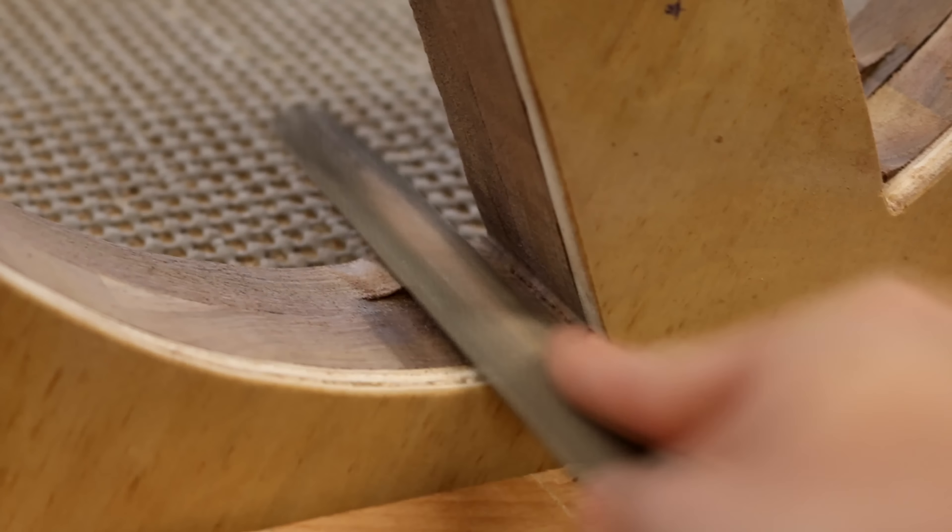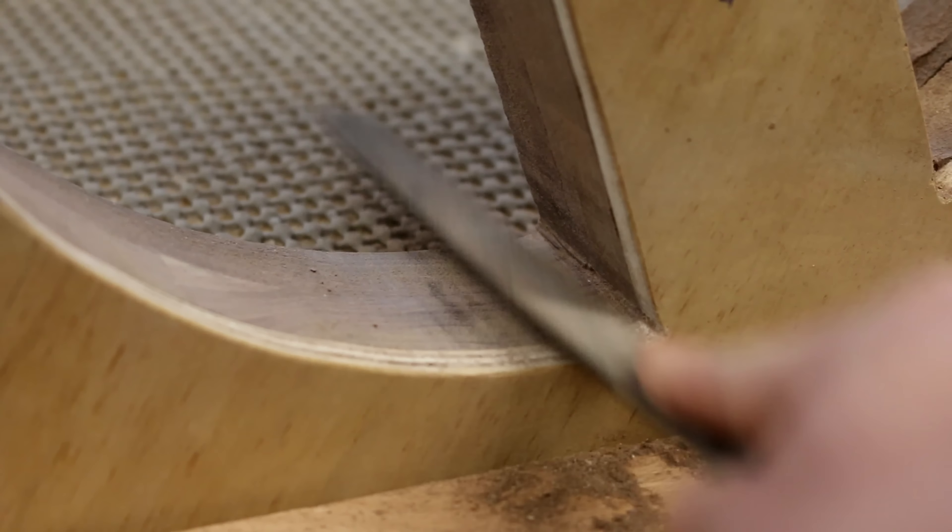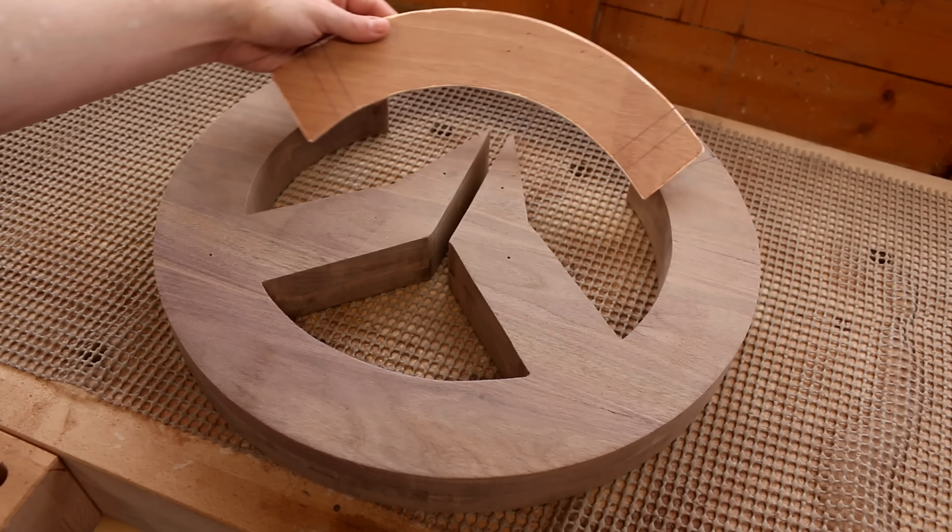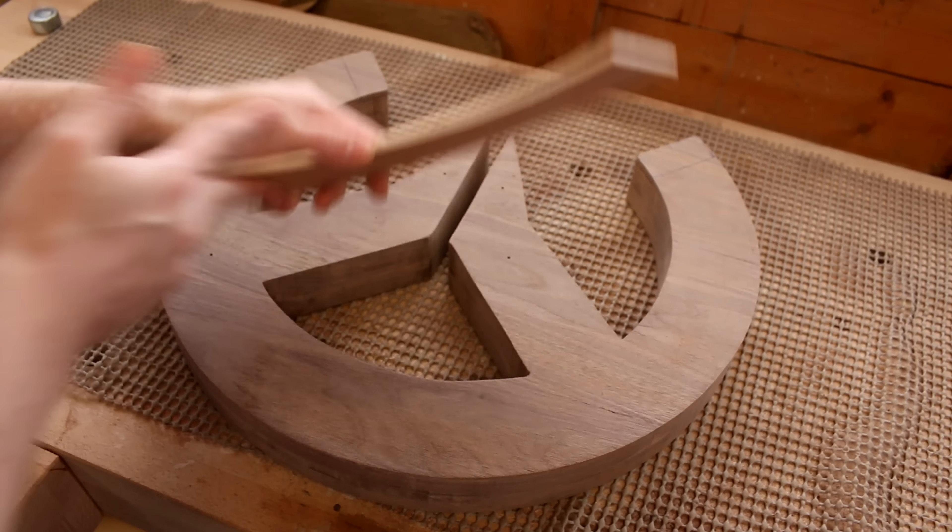As always, the tight corners need to be cleaned up by hand. I just used the file again. For the top of the logo, I cut out an arch in some 6 millimeter plywood. This will be the back of the light section.